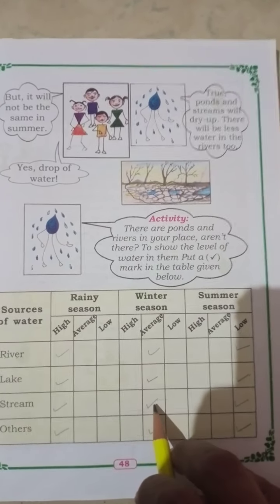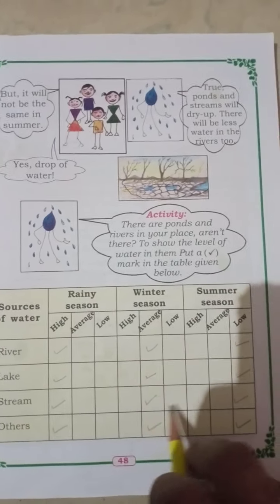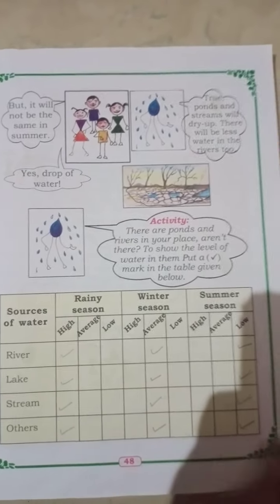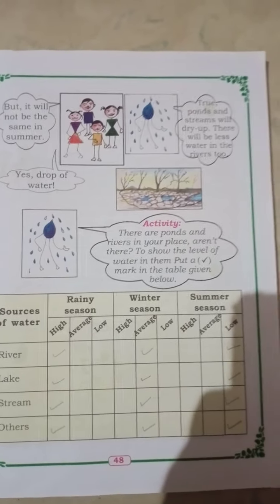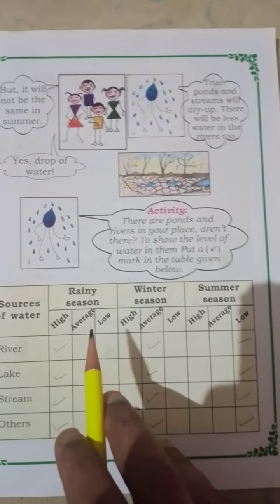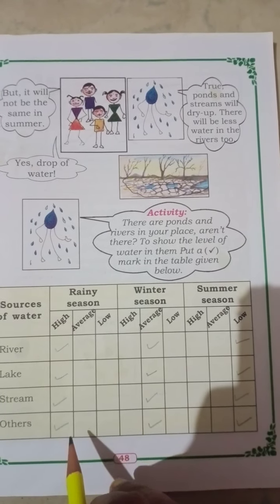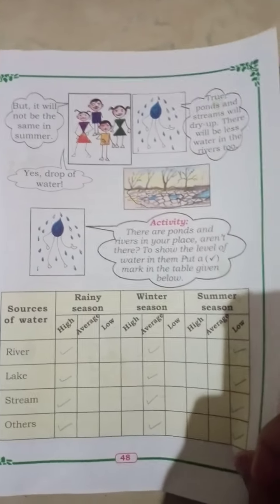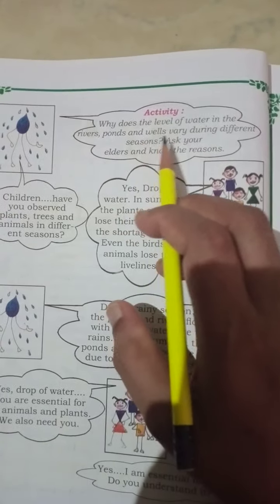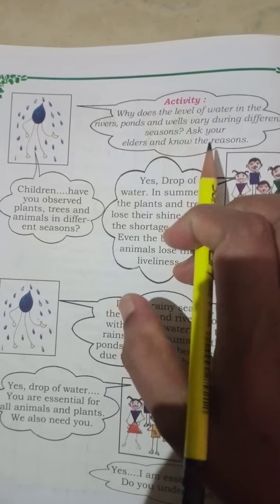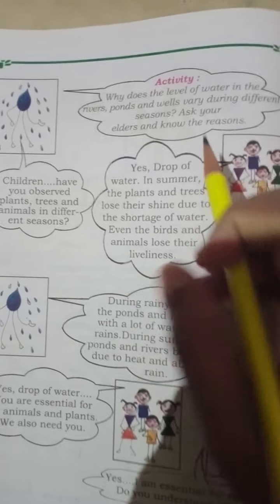In rainy season, the water level will be high. In winter season, it will be average. And in summer season, it will be low. There is one more activity: Why does the level of water in the river, ponds, and wells vary during different seasons? Ask your elders and find out the reason.